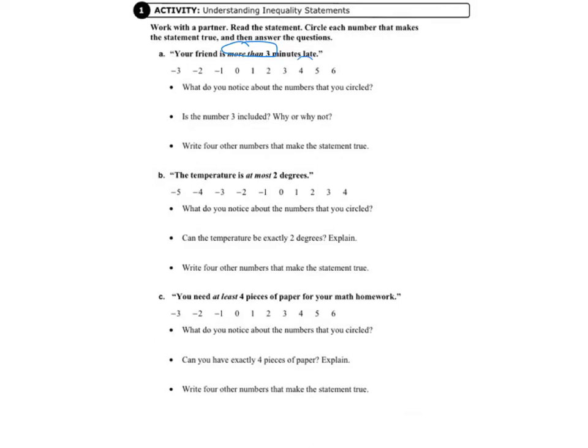So three is not more than three, so we don't want to circle three. We just want to circle all the numbers that are more than three. So four, five, and six are more than three, so we'll circle those. And then it says, what do you notice about the numbers that you circled?